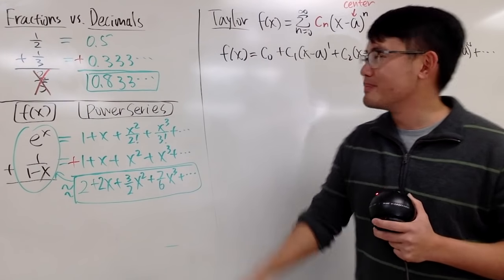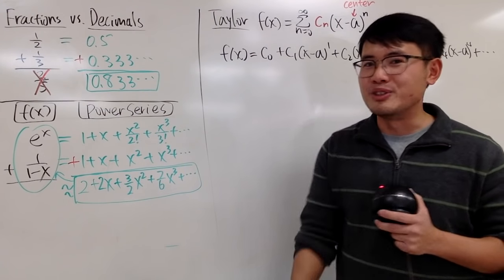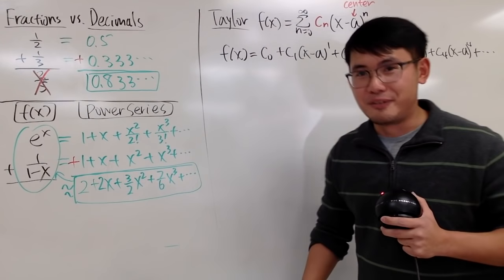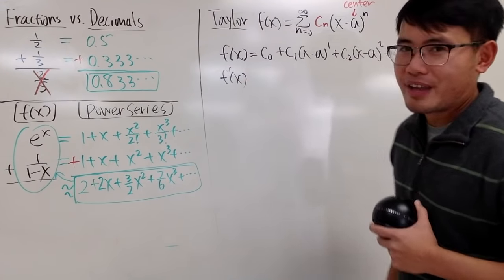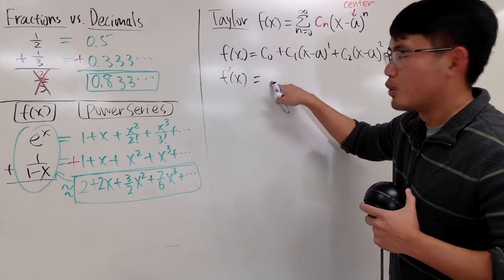Well, you have a constant. How can you kill a constant? Yes, by integration. No, sorry, just kidding. By differentiations. So what we'll do is differentiate this one time. And in that case, you'll see that c0 will be gone, right?